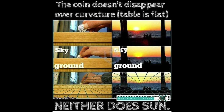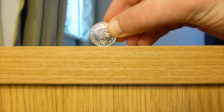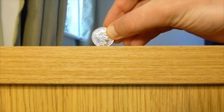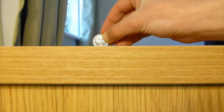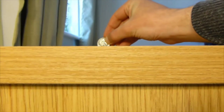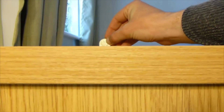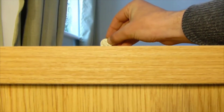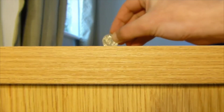You sometimes see memes like this in flat earth groups. Here we've got a coin on top of a table and as it moves away the bottom of it disappears. It seems pretty obvious really what's going on here — it's just that the camera is a little bit lower than the top of the table. You can see you can't see the top of the table, so it's pretty obvious that the camera's below it, and all that's happening as the coin moves away is it gets obscured by the front of the table.